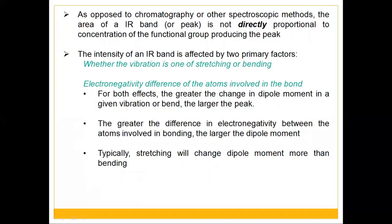Unlike chromatography or other spectroscopic methods, the area of an IR band is not directly proportional to the concentration of the functional group producing the peak. The intensity of an IR band is affected by two primary factors: whether the vibration is stretching or bending, and the electronegativity difference of the atoms involved. The greater the change in dipole moment during vibration, the larger the peak. Stretching vibrations typically change the dipole moment more than bending, which is why stretching vibrations appear at higher frequencies in the IR spectrum.